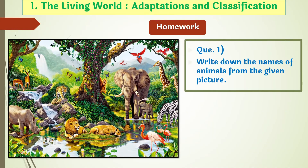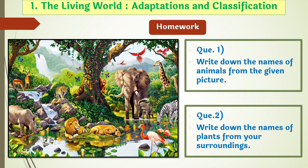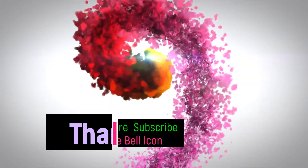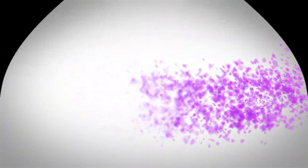Now you have to do some homework. Look at the picture and write down the names of animals from the given picture. Your second homework is to write down the names of plants from your surroundings. Thanks for watching the video. Please like, share, and subscribe.